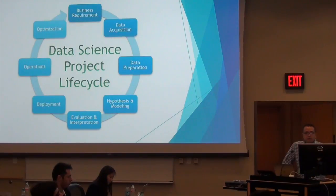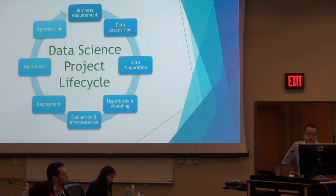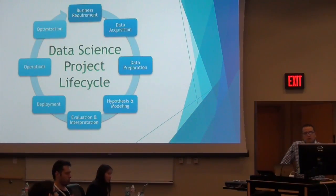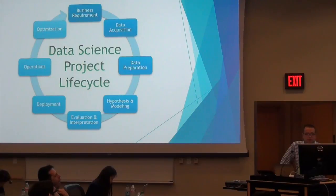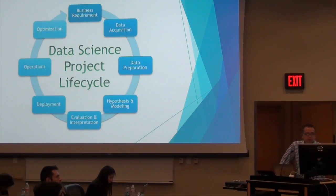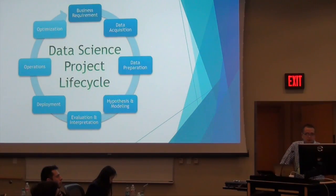Data science project lifecycle — that is the whole process when we build a data science project. The output from this project could be a recommendation system, fraud detection system, or whatever business project. You have to go through the project lifecycle. It starts from business requirements, data acquisition, data preparation, modeling, evaluation, then you deploy to the production line, collect data from operations, and get feedback from the system to optimize new models. This is the whole project lifecycle.